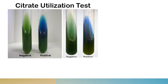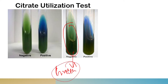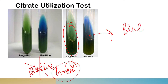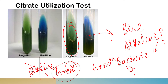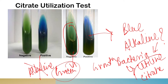In the figure you can see the positive and negative results. The negative one shows the medium is green in color, meaning it is not in alkaline condition. The positive one shows the medium is blue in color, meaning it is in alkaline condition because of the growth of bacteria. Only those bacteria which are able to utilize citrate will grow, producing alkaline conditions and turning the medium blue.